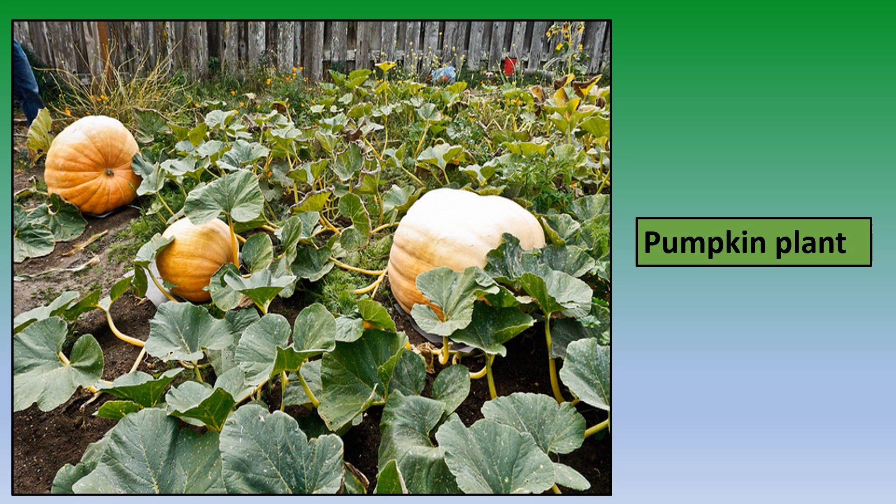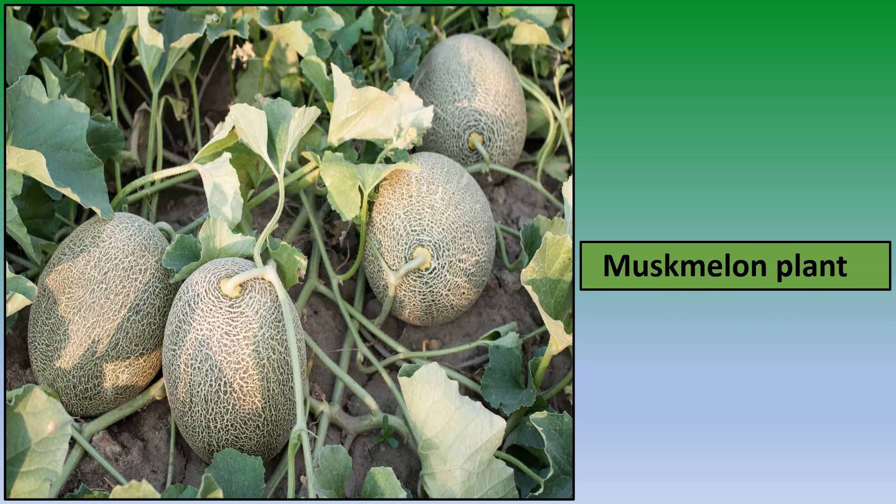The pumpkin plant is also a creeper, as it grows along the ground. The muskmelon plant is another example. So children, creepers have a very weak stem — they cannot stand straight, nor can they carry the weight of their fruit. That's why they grow along the ground.